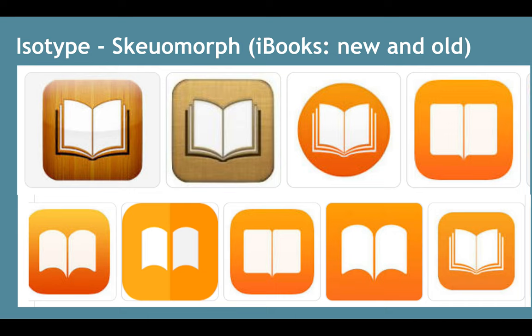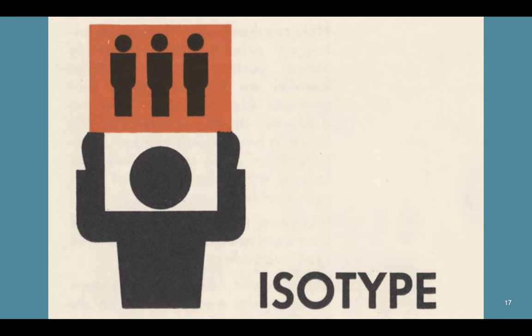An example of this is iBooks — the icon on the iPhone, iPad, MacBook, or desktop computer. In the old days, the icon looked very much like a physical book: you could see the wood behind it, the paper, and the pages. As you go over time, it becomes more basic, more easily replicable in vector design programs, and on the far right at the top it becomes very simple.